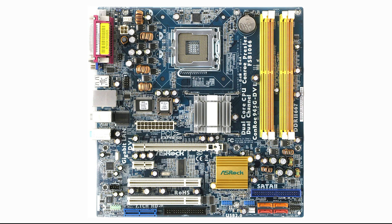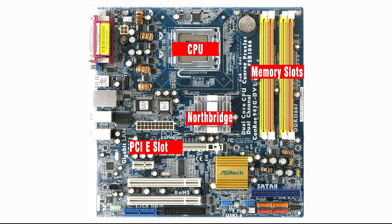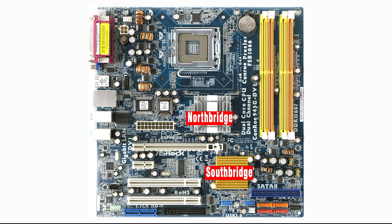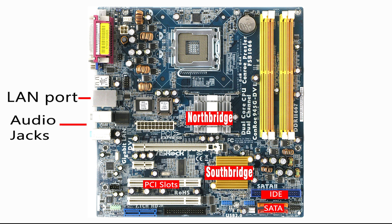Older motherboards had chipsets consisting of Northbridge and Southbridge. These two chips managed communication between the CPU and other components. Northbridge handled communication among the CPU, RAM, PCIe, and integrated video controllers, executing faster performance because it connected the most important components. The Southbridge was responsible for lower-performing components such as PCIe slots, SATA and IDE connectors, USB ports, onboard audio, and networking. While Northbridge was directly connected to the CPU, the Southbridge connected to the CPU via the Northbridge.